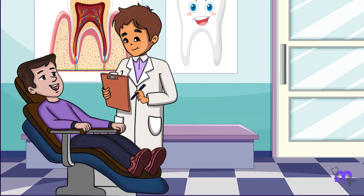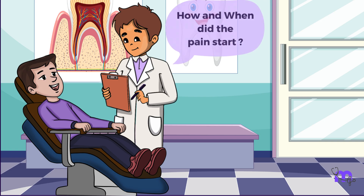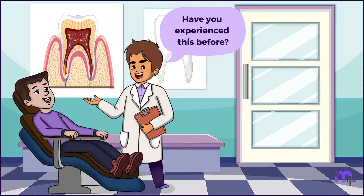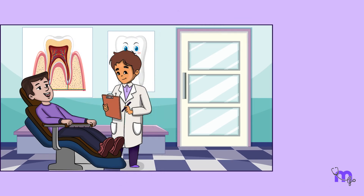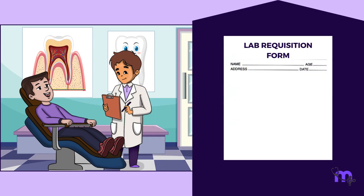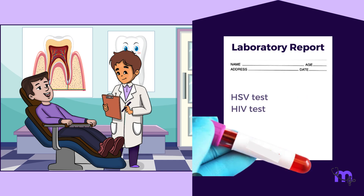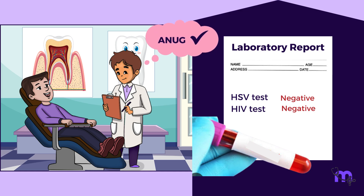A detailed history of the disease should focus on the onset and duration. Was the disease recurrent? Had there been any previous treatment — if yes, when, for how long, and what type? My next step was diagnostic tests. I asked for an HSV and HIV test to be done, which showed a negative result for both. At this point, acute necrotizing ulcerative gingivitis seemed to be the best clinical fit.